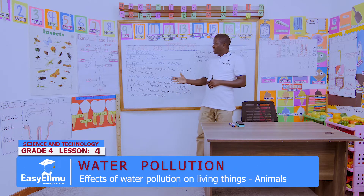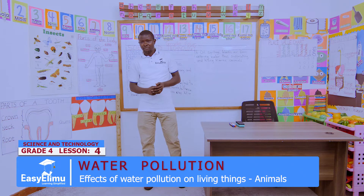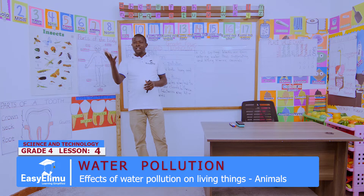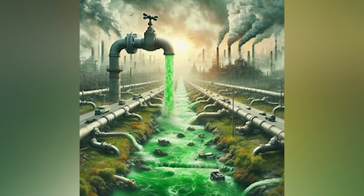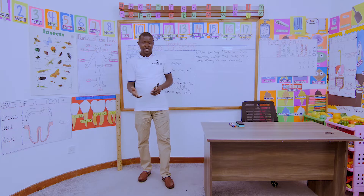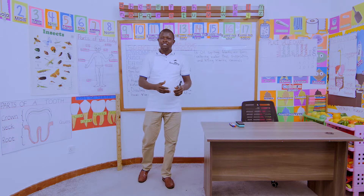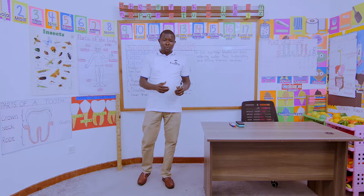For today's lesson, I would like us to observe the following pictures. In the first picture, you can see an industry where the sewer lines are being ejected directly into the water. As you can see, the water is going directly to the river. What is happening there? What can you see from that picture?